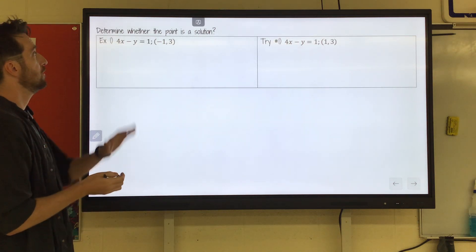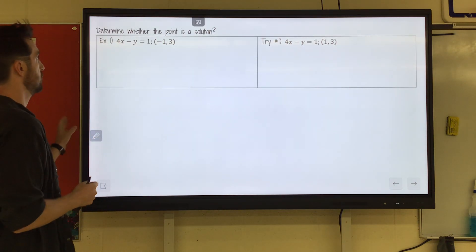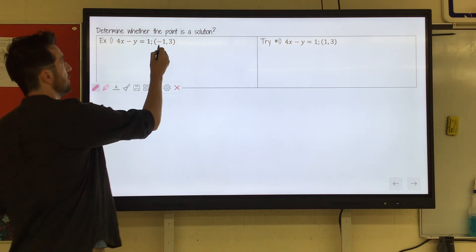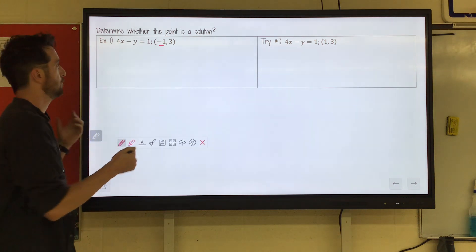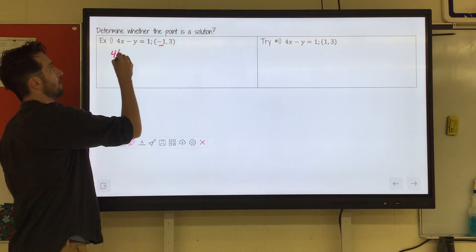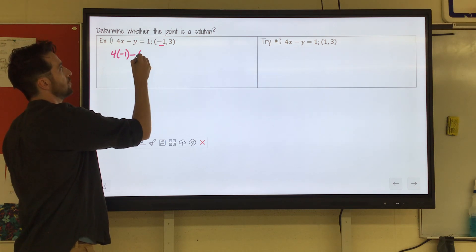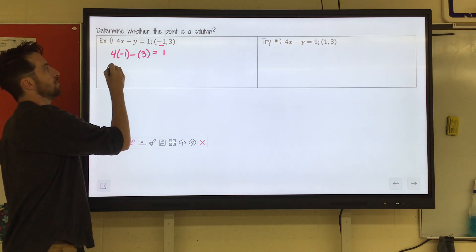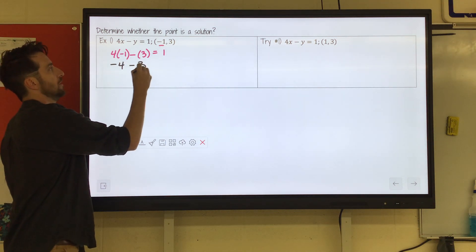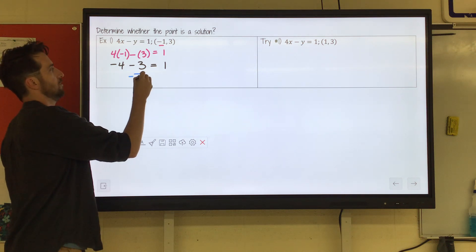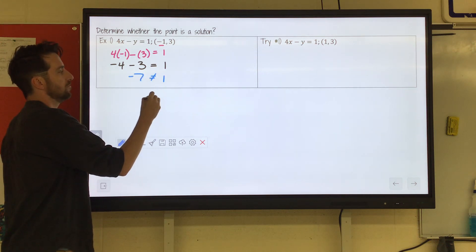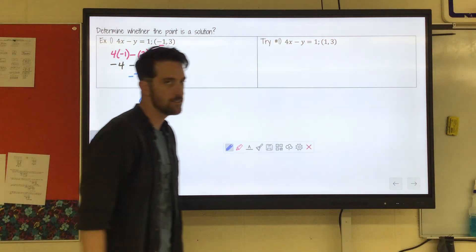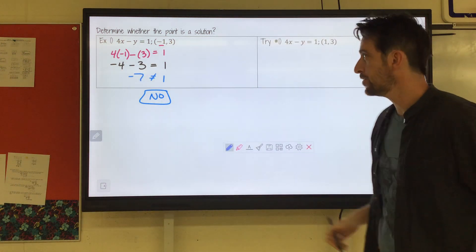So we're going to check if negative 1, 3 is a solution to 4x minus y equals 1. Does it make it true? Now negative 1 is the x, so whenever we see an x we're going to substitute in negative 1 and then minus y is 3. So we're checking if this equals 1. Well, 4 times negative 1 is negative 4. Negative 4 minus 3 is negative 7, which is not 1. So no, that is not a solution here.